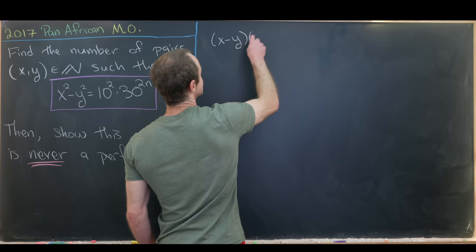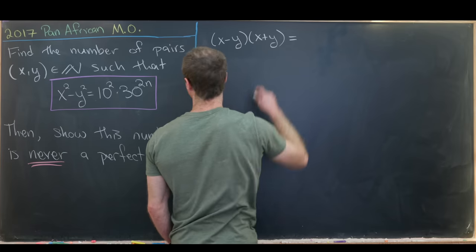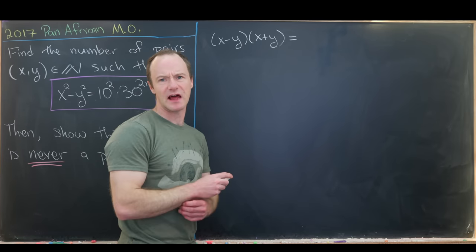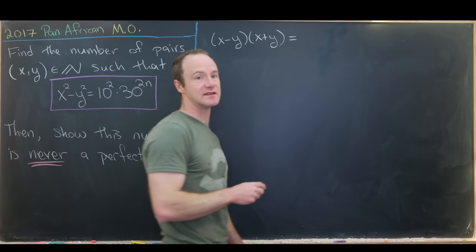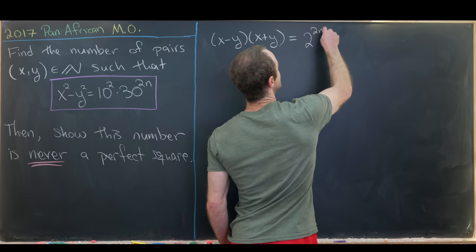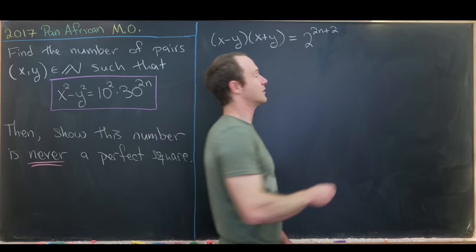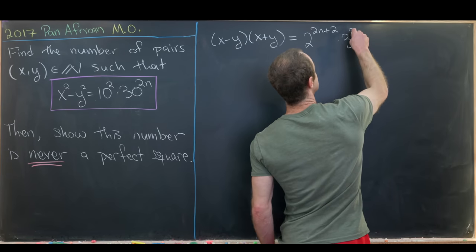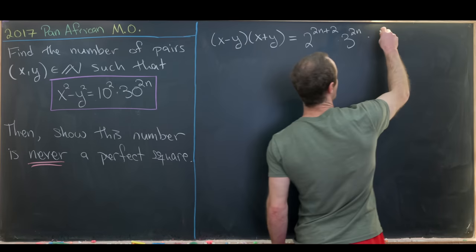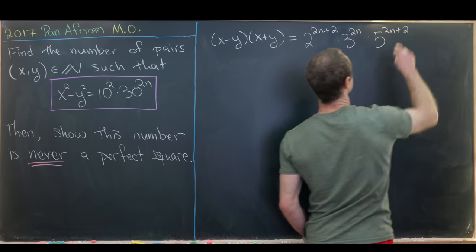So we'll have (x minus y) times (x plus y) equal to 2 to the power 2n plus 2, times 3 to the power 2n, times 5 to the power 2n plus 2.